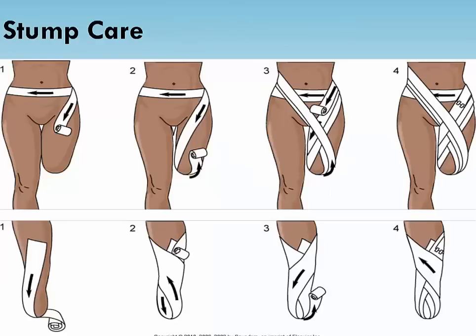Stump care includes range of motion exercises to prevent flexion contractures, particularly of the hip and knee. Using weights increases muscle power and strength in the shoulder, arm, forearm, wrist, finger, and thumb muscles, preparing them for crutch walking. Isometric exercises maintain strength and increase muscle tone. Frequent prosthetic adjustments are often required in the first year. When the prosthesis does not feel comfortable during standing and walking, it should be removed and reapplied. A figure-eight wrap helps shape the residual limb and reduce edema. Initially, pushing the residual limb into a soft pillow, then a firmer pillow, and finally onto a hard surface toughens the limb in preparation for a prosthesis.